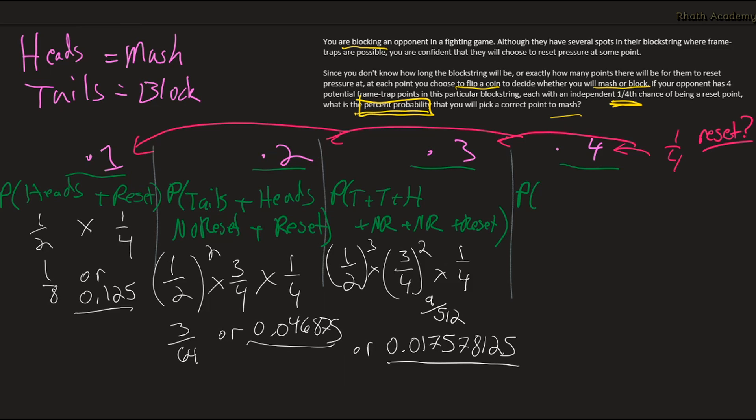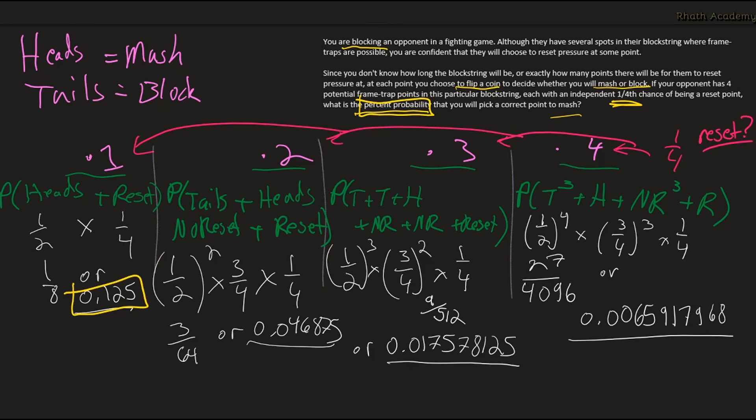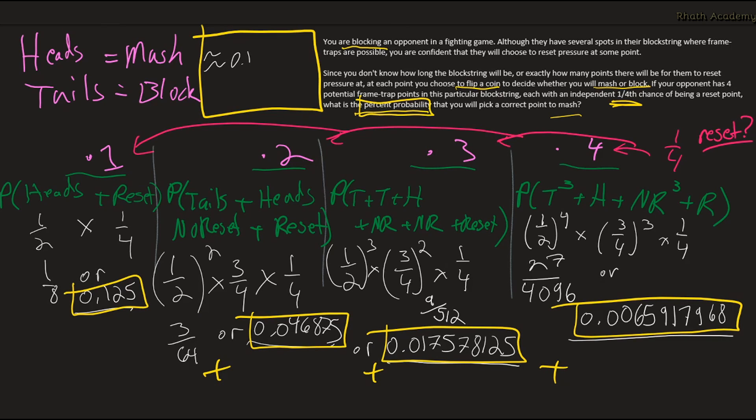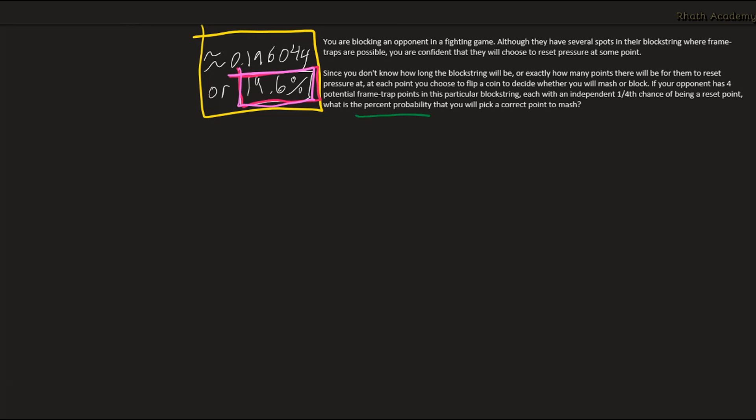And last, the fourth point ends up being the chance that we get 3 tails, 1 heads, 3 no resets, and then 1 reset, which simplifies down to 27 over 4096. And remember, these are the only 4 probabilities in which we mash at a correct spot. So now we just need to add them all together, which gives us roughly 0.196044, or about 19.6%. So the total percent probability that we chose a correct point to mash is 19.6%.